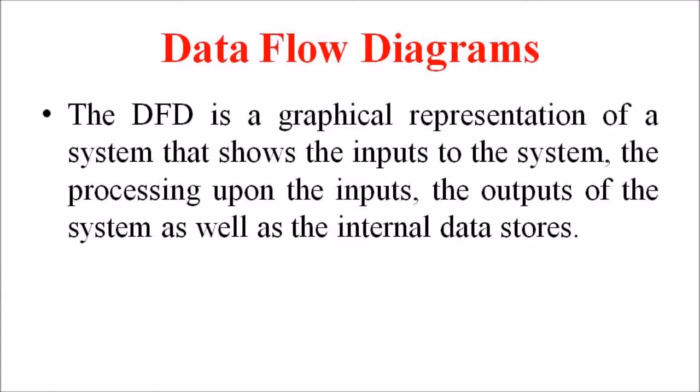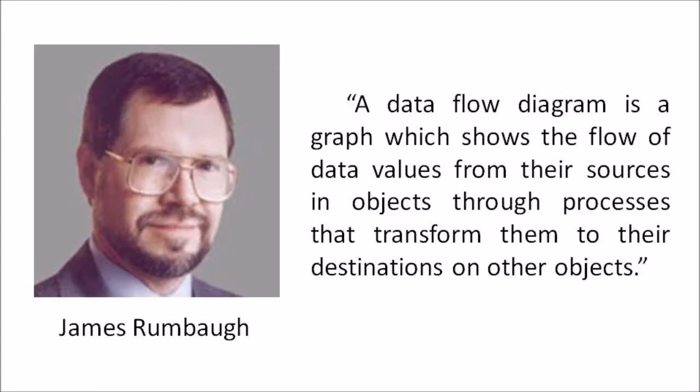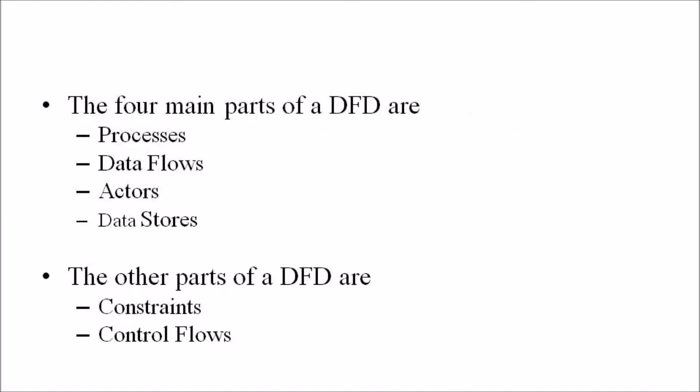Functional modeling is represented through a hierarchy of DFDs or data flow diagrams. The DFD is a graphical representation of a system that shows the input to the system, the processing upon the input, the output of the system, as well as the internal data stores. DFDs illustrate the series of transformations or computations performed on the object or system and the external controls and objects that affect the transformation. Rambog defined a data flow diagram as a graph which shows the flow of data values from their sources in the object through the processes that transform them to their destination on other objects. The main four parts of data flow diagrams are process, data flow, actors, and data stores. It also has other parts like constraints and control flow, and we are going to discuss each of these features.